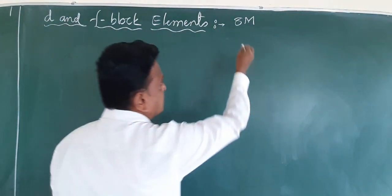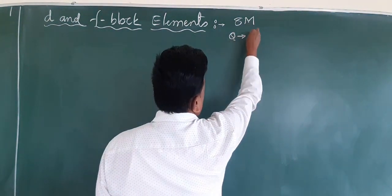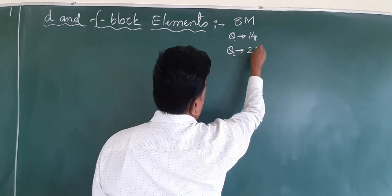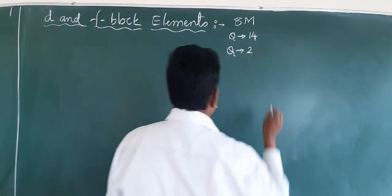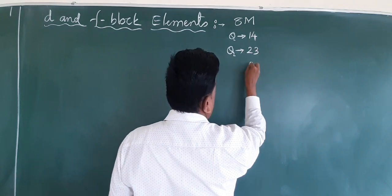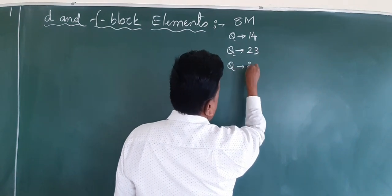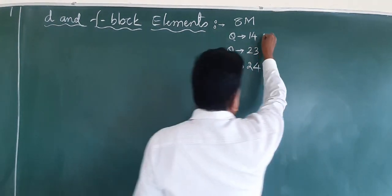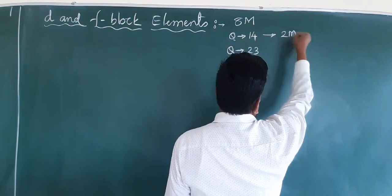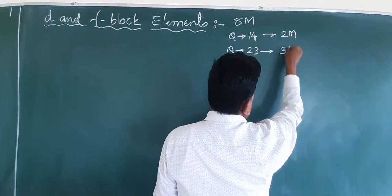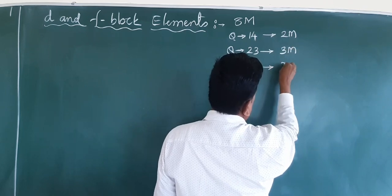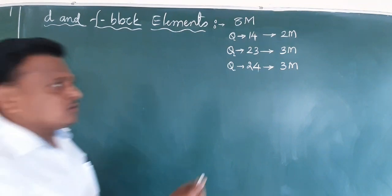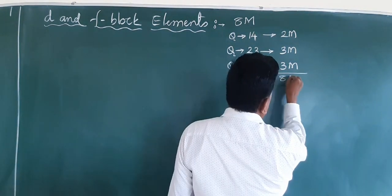In these 8 marks, question number 14 has 2 marks, question number 23 has 3 marks, and question number 24 also has 3 marks. The total weightage of this chapter is 8 marks.